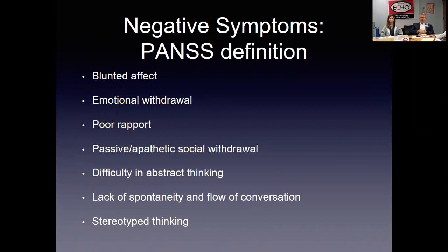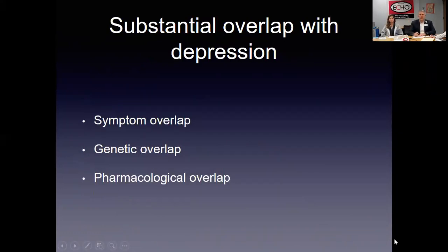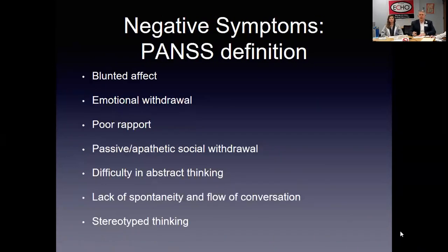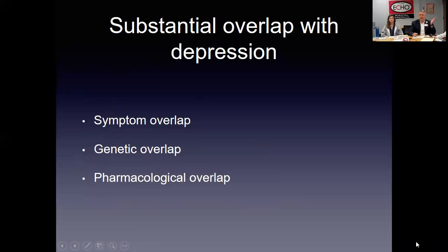Negative symptoms in the PANSS specifically include affect, emotional withdrawal, deficits in rapport, and abstract thinking — though I don't usually think of abstract thinking as a negative symptom. Also included are lack of spontaneity and stereotyped thinking, blunted affect, poor rapport, and apathy in social situations. Those to me sound like depression, and there is significant overlap in terms of symptoms, genetics, and pharmacology between negative symptoms and depression.